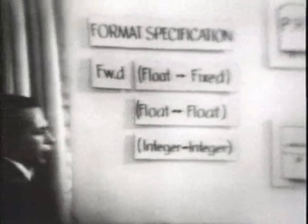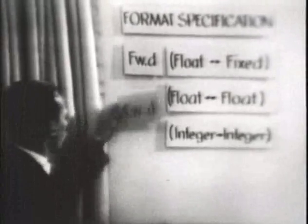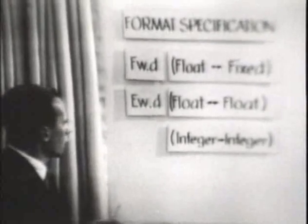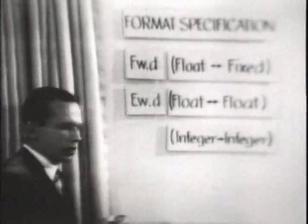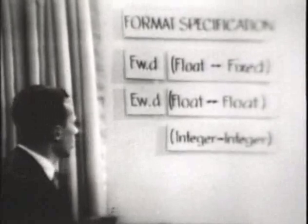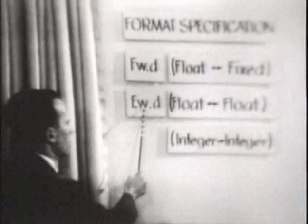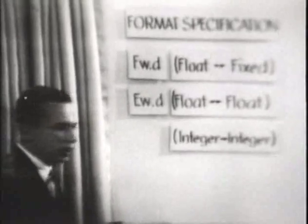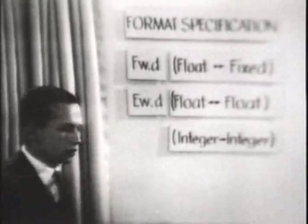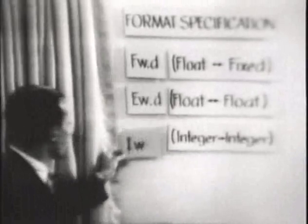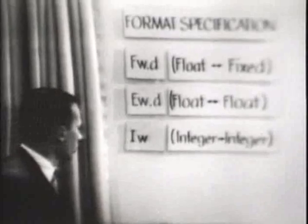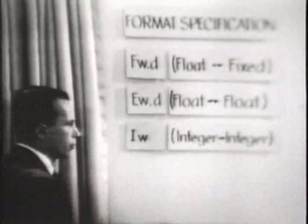Therefore, the number two would appear here. In a similar fashion, we may specify floating point to floating point conversion, where E tells the FORTRAN program that we wish to convert floating point input to floating point internally and vice versa, where the letters W and D represent exactly the same items as they did for the previous conversion. The third is specified by the letter I, meaning integer to integer conversion, where W is the field width.